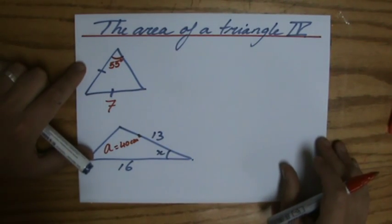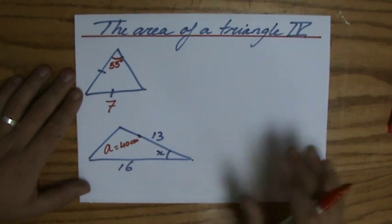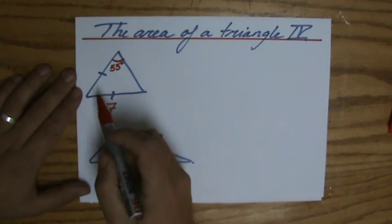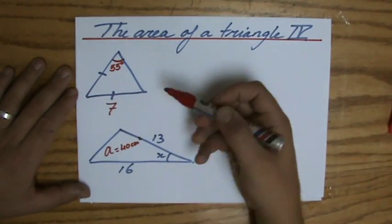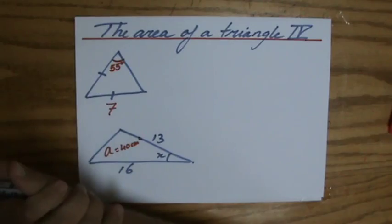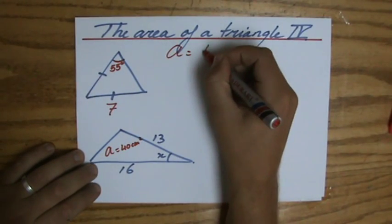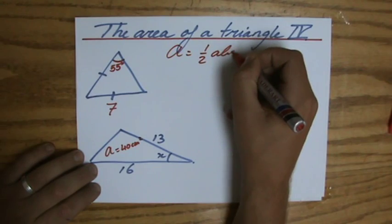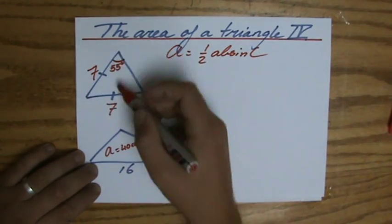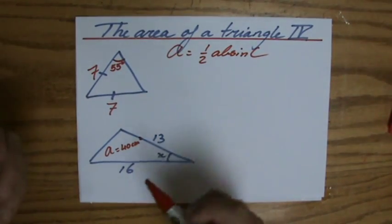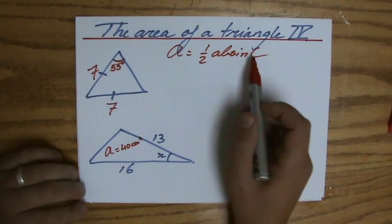So two more questions about the area of a triangle. I've explained all the basics before — these are a little bit more advanced in that you just have to use your brain. What do I see here? It's an isosceles triangle. The area of any triangle is one-half AB sine C. So if that side is 7 and that side is 7, I cannot calculate that one directly.